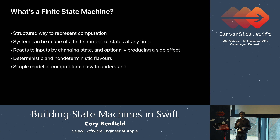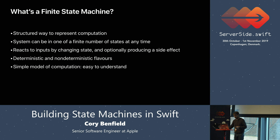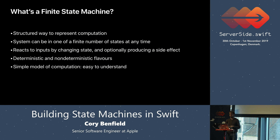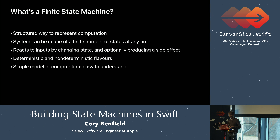At a very basic level, they're an extremely simple idea. A finite state machine can model any system that can be represented entirely by its current state, where its current state is one of a finite number of possible states. A Swift Boolean can be modeled by a finite state machine — it has two states, true and false, and a number of operations on those states. A state machine performs computation by reacting to inputs, which will usually perform a state transition to a new state and optionally cause some kind of side effect.